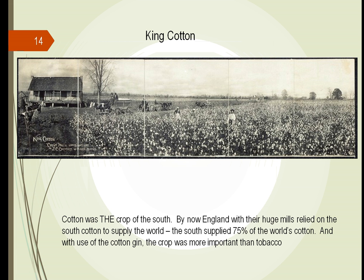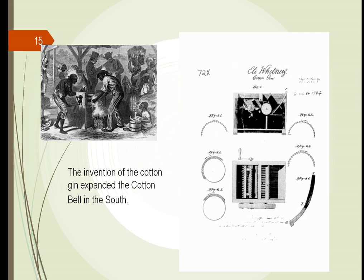Cotton was the king at the time — the crop of the United States. Before cotton it had been tobacco, but cotton was much easier to grow and vast tracts of land could be taken over by it. The southern United States supplied 75% of the world's cotton, and at that time it was all hand-picked with hand separation of seeds. The cotton gin was then developed, making the crop even more important.